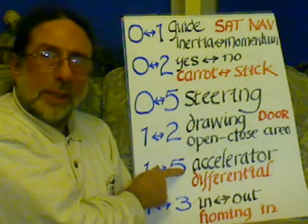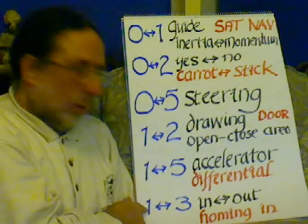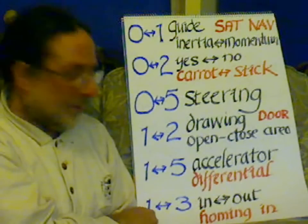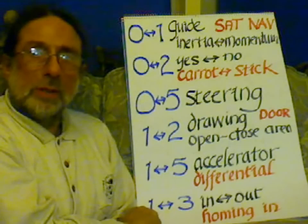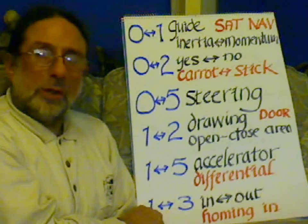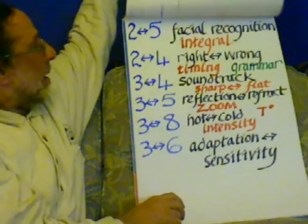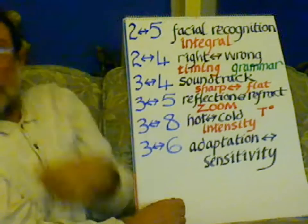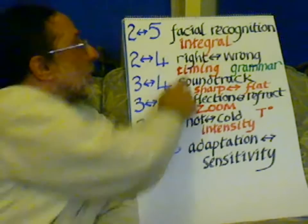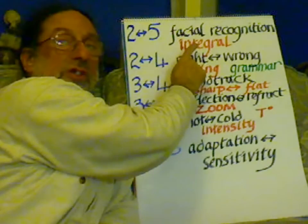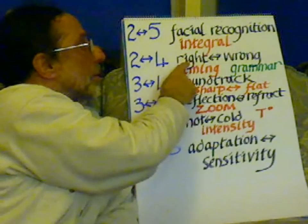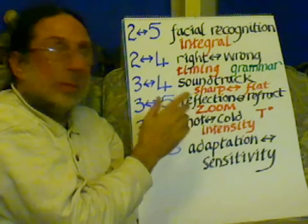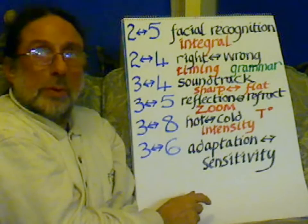From 1 to 3 — movement to the space — is moving in or out of the space, homing in. If you're moving an object, you can communicate that the object has moved into the point where you want it. From 2 to 5 — face to eye — is facial recognition, and the recognition of all sorts of surfaces. This surface recognition is the integral. Just as you had the differential going to the left brain, the left hemisphere, the integral goes to the right brain, the right hemisphere.